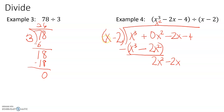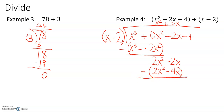Now we need to think: x times what is going to give us 2x squared? That's plus 2x. 2x times x is 2x squared; minus 2x times 2 is 4x. Use parentheses and carefully subtract. It's going to be negative 2x plus 4x, which is 2x minus 4.